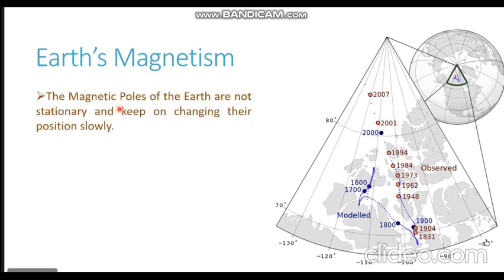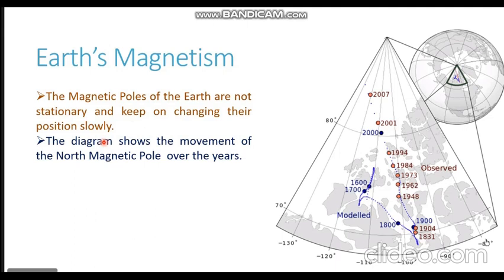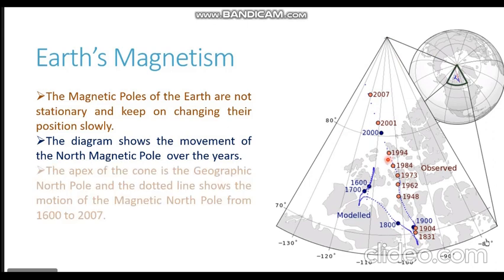The magnetic poles of the earth are not stationary. The geographic poles are at a fixed location, but the magnetic poles keep on changing their position slowly. As shown in this diagram, the apex of the cone represents the north geographic pole, and you can see how the north magnetic pole has been changing its location from 1600 to 1700, 1800, 1900, 2000, and so on.